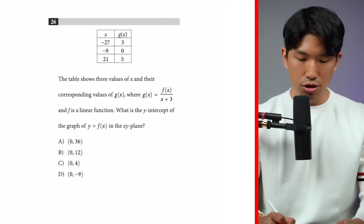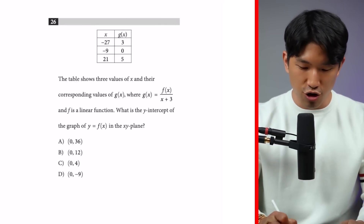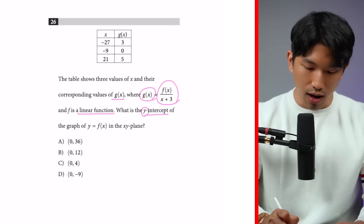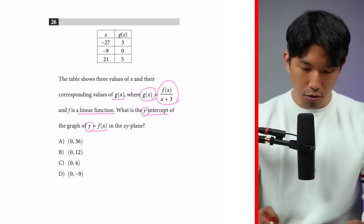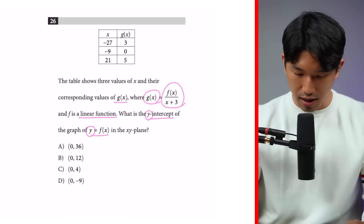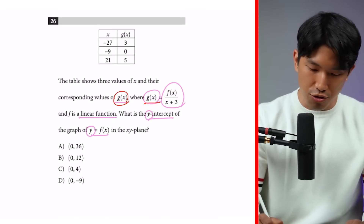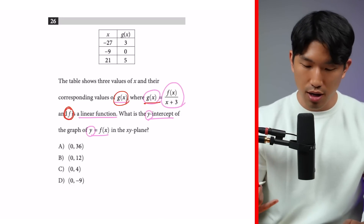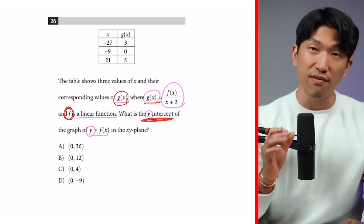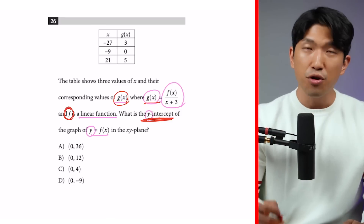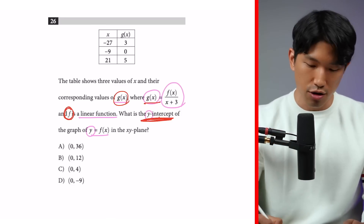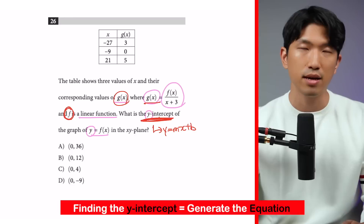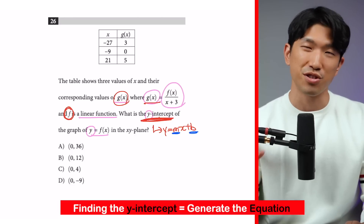Number one: the table shows three values of x and their corresponding values of g of x, where g of x equals f of x divided by x plus 3, and f is a linear function. What is the y-intercept of the graph of y equals f of x on the xy plane? We have function g of x equals f of x divided by x plus 3, and we know f is a linear function. We have to find the y-intercept of this linear function.